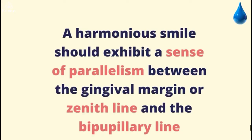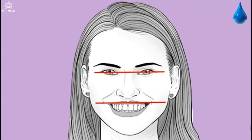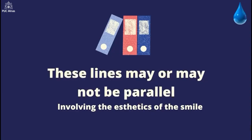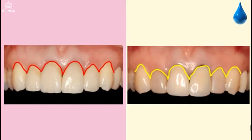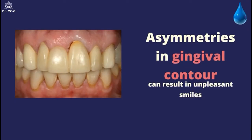Gingival zenith is the contour of the gingival margin of the teeth. A harmonious smile should exhibit a sense of parallelism between the gingival margin or zenith line and the bipolar line. These lines may or may not be parallel, involving the aesthetics of the smile.